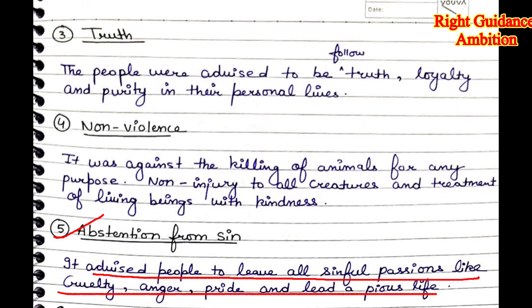The fifth point is abstention from sin. It advised people to leave all sinful passions like cruelty, anger, and pride, and to lead a pious, simple, and pure life.